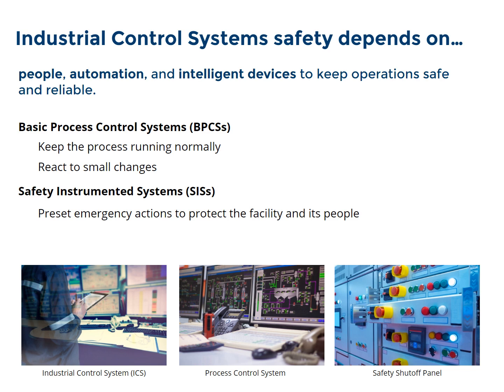Safety instrumented systems, or SIS, are independent safety systems pre-programmed to immediately react when a monitored physical process strays beyond preset bounds. They are programmed to bring the physical process back to a safe state, avoiding a catastrophic event and allowing the operator to attend to the problem and make repairs. When an SIS fails to do its job, we have unpleasant events like the Deepwater Horizon disaster, where the SIS failed to bring the drilling operation back to a safe state, causing months of ecological damage in the Gulf of Mexico.